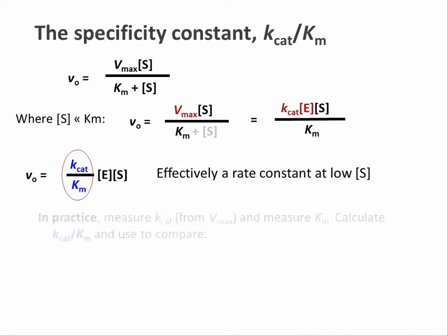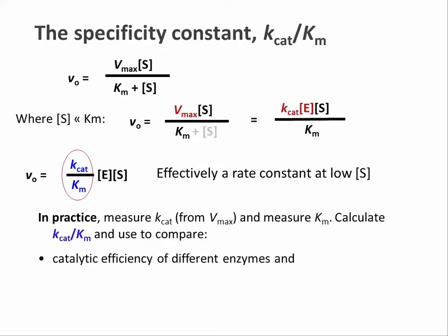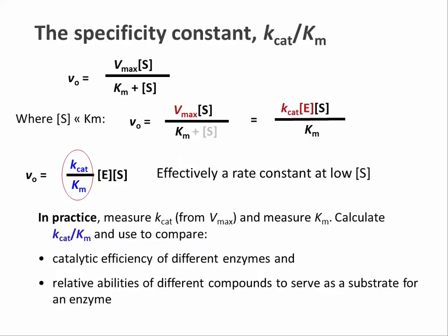In practice, Vmax and Km can be measured for an enzyme, and Kcat is then calculated from Vmax and the enzyme concentration. The ratio Kcat over Km is very useful to compare the catalytic efficiency of different enzymes under realistic physiological conditions where a substrate is not saturating. It can also be used to compare the efficiency at which one enzyme can convert a number of different substrates. In both cases, the take-home message is the higher Kcat over Km, the better the enzyme reaction or the more efficient.